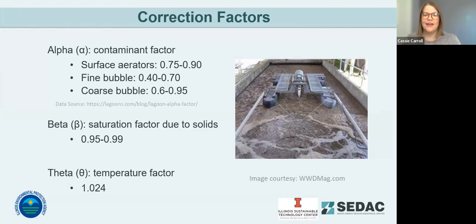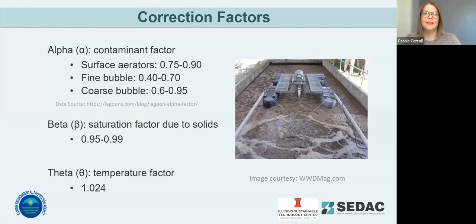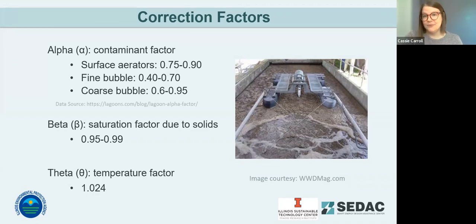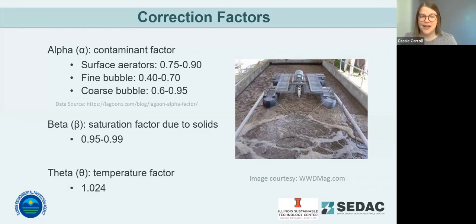Small bubbles also rise more slowly, reducing the ability to mix and contact more microbes in the water, which can suppress the alpha factor as surfactants build up more easily. The increased rise speed and turbulence from larger bubbles reduces that surfactant coating and maintains a higher alpha factor. As water gets cleaner, the aeration alpha factor improves — this is why most lagoons use a tapered aeration strategy with more aerators in the primary lagoon and fewer in the polishing lagoon. Surface aeration system alpha values range from 0.75 to 0.9; fine bubble tanks from 0.4 to 0.7; coarse bubble tanks from 0.6 to 0.95.